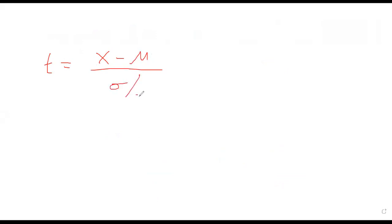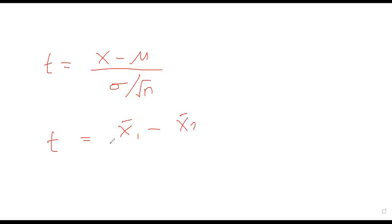The difference only comes when you're dealing with two samples, where T is given by the mean for sample one minus the mean for sample two, divided by what we call the pooled variance.